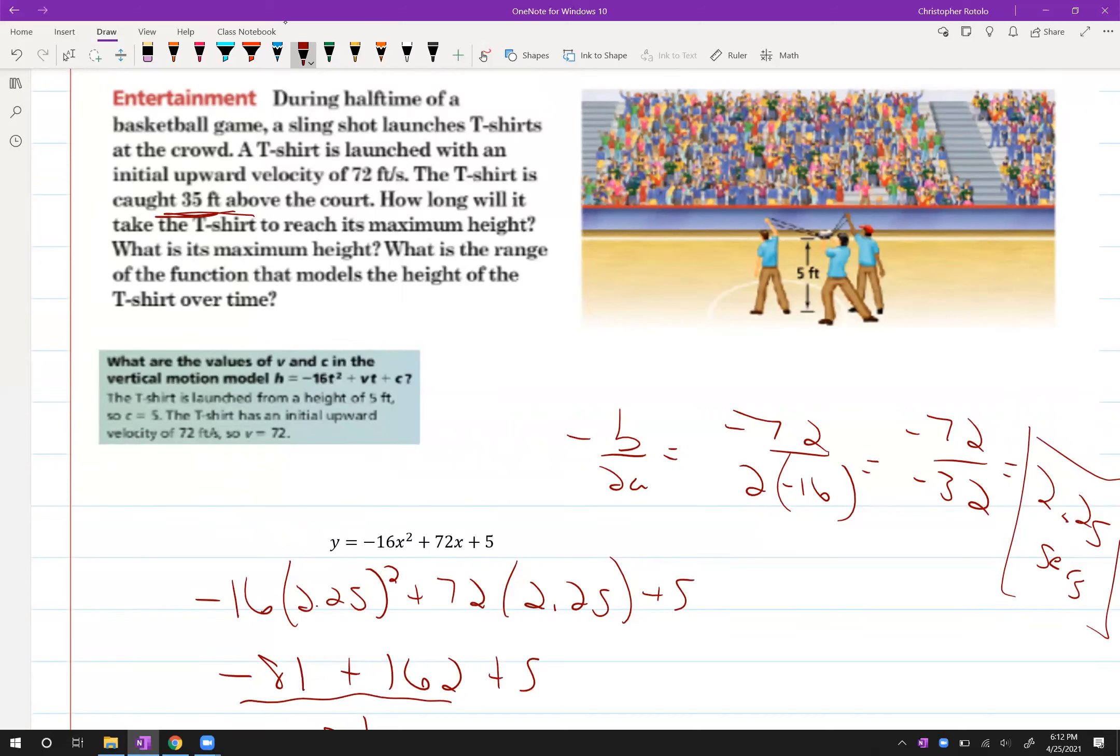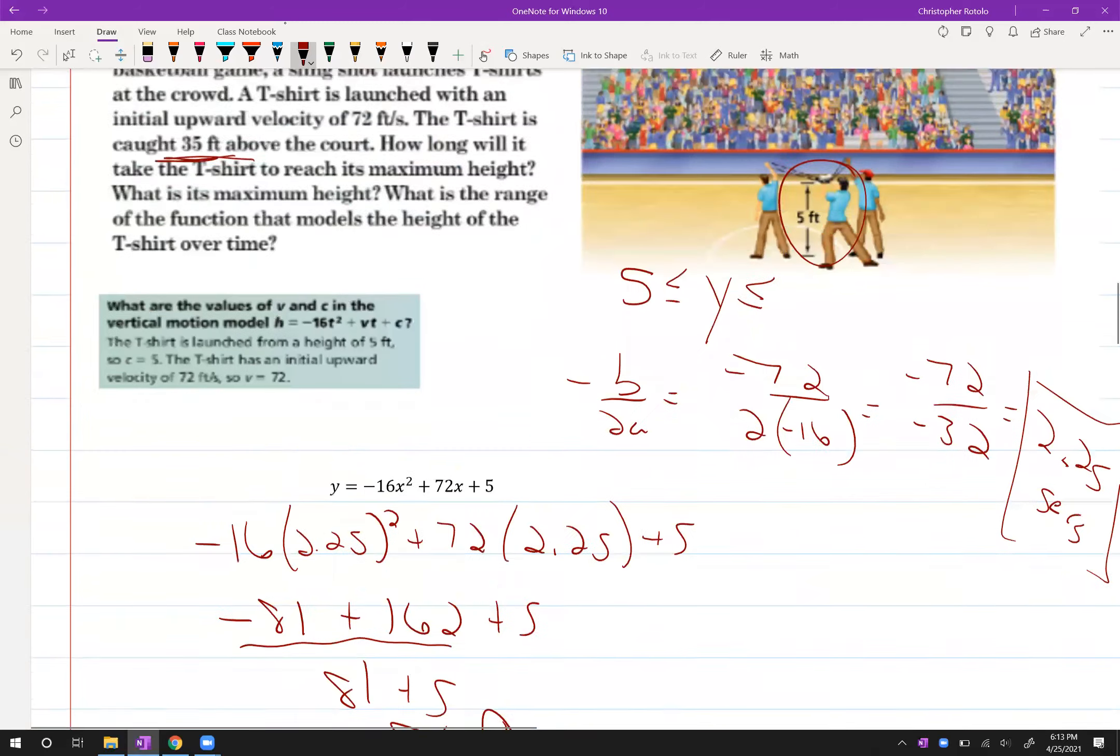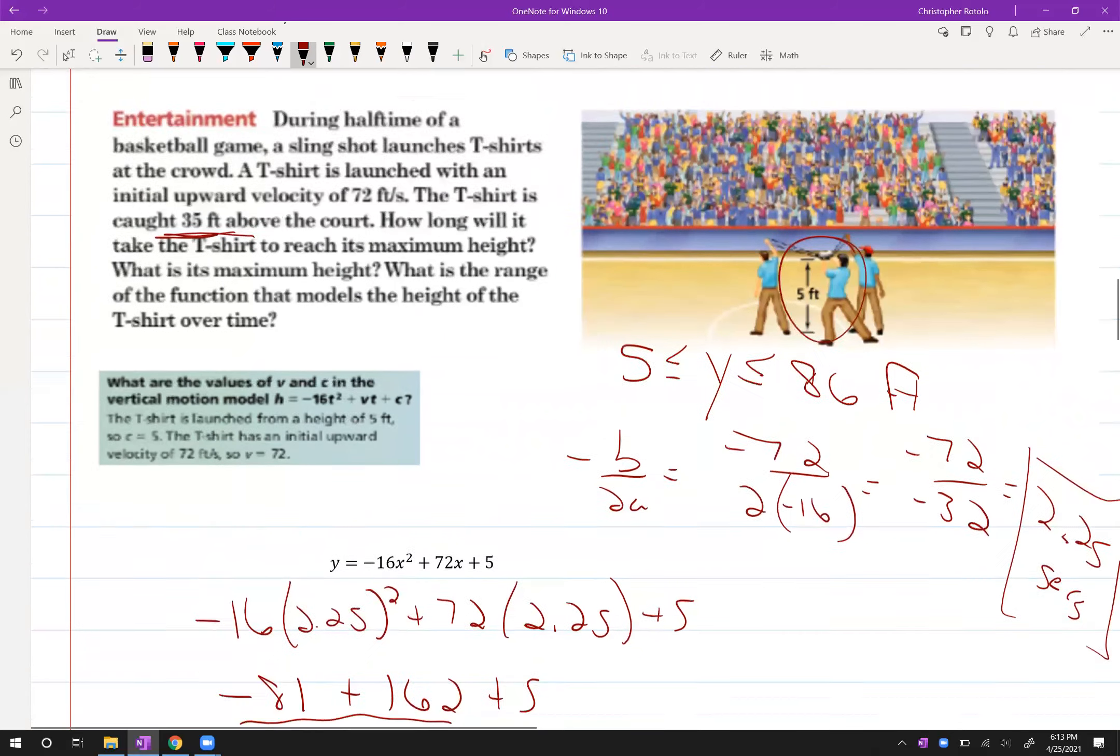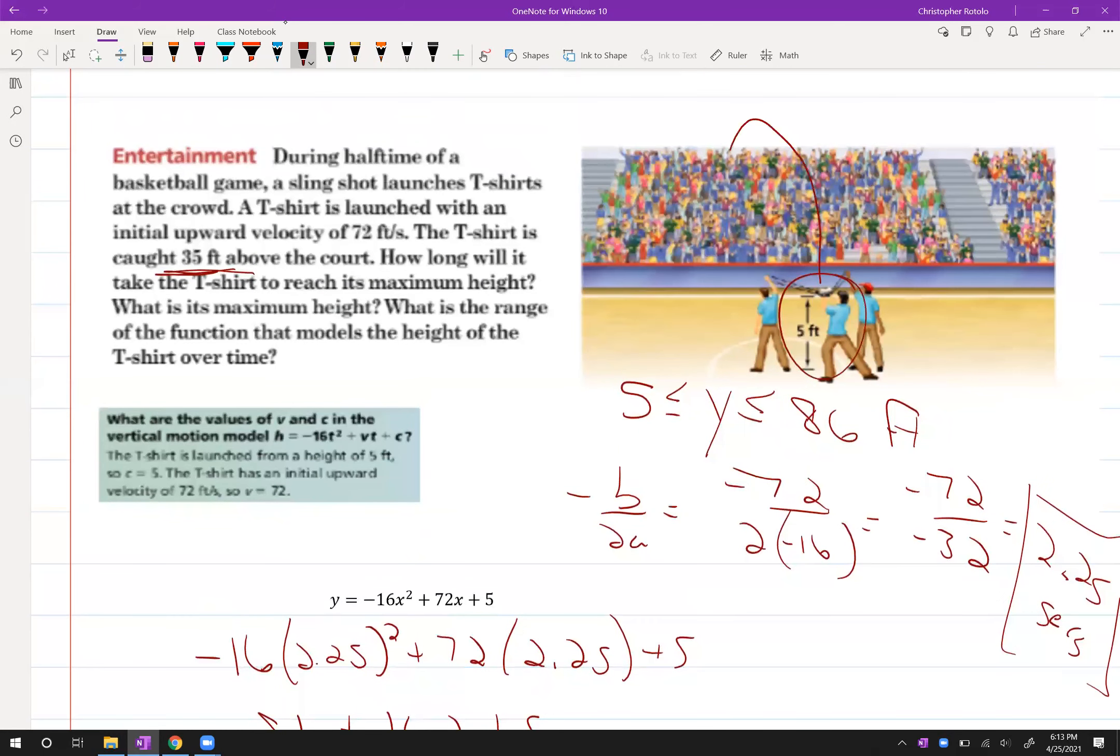All right. So it started at five feet. So my range, my Y values has to be greater than or equal to five feet and less than or equal to 86 feet. So we start to limit some of that range, because it's not going to go completely. So this t-shirt is going to go up in the air and come down, hit that 35 feet.